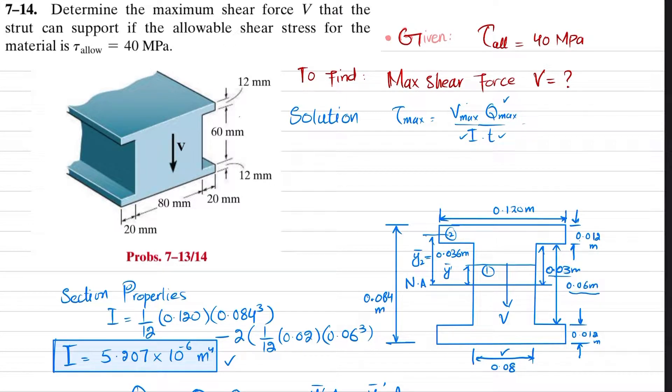We know that maximum shear stress equals V times Q divided by I times t. We are finding V. The maximum shear stress is given as 40 megapascals, but we do not have Q, I, or t.